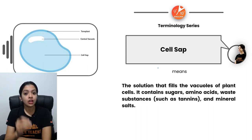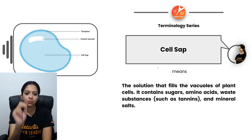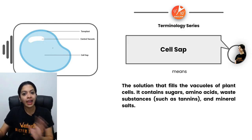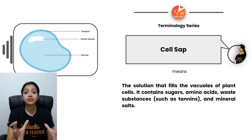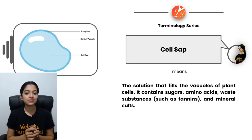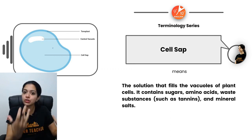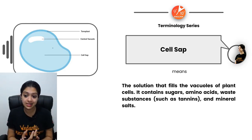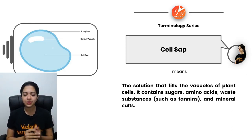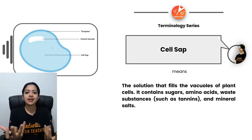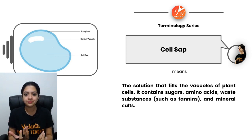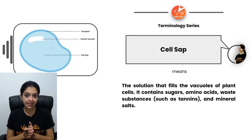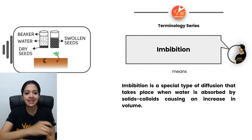Cell sap is not just water — it's a solution consisting of water, sugars, amino acids, waste substances, and mineral salts. All of this together fills the vacuoles and forms what we call cell sap. It gives turgidity and structure to the plant cell, so it's very important.